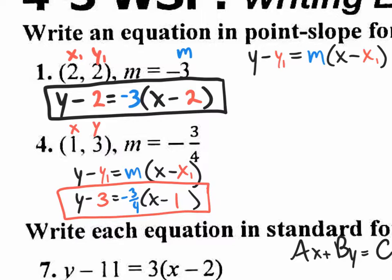That's your answer because it says write the equation in point-slope form. If they said write it in slope-intercept form, you'd have to distribute, move the negative 2 over, and get y by itself to get y equals mx plus b form. But here they just say write it in point-slope form, so we're done.